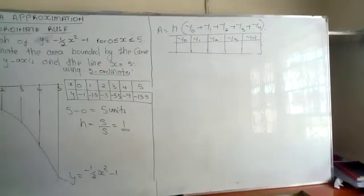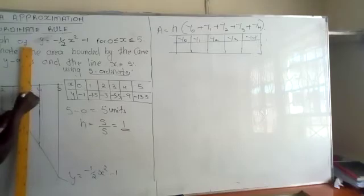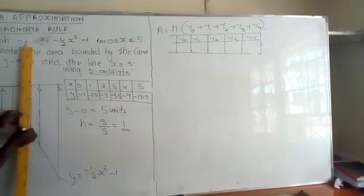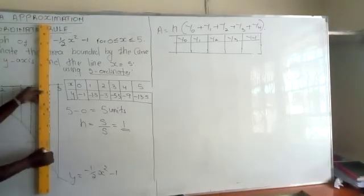Our first y naught will be when x is 0.5. Then we create a rectangle. Then the second one will be at 1.5. The third at 2.5. The fourth one at 3.5. And finally, at 4.5.